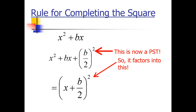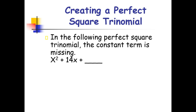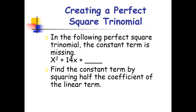Now let us go to a clearer example. In the following perfect square trinomial, the constant term is missing. We have x squared plus 14x plus blank. Remember that to find the constant term, we will get the half of the coefficient of the linear term and square it. So half of 14 is 7, and 7 squared is equal to 49. The number to replace in our blank is 49.